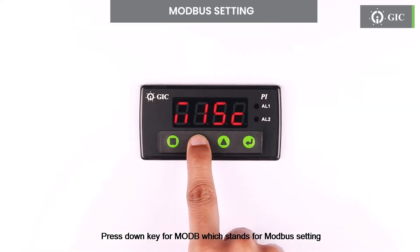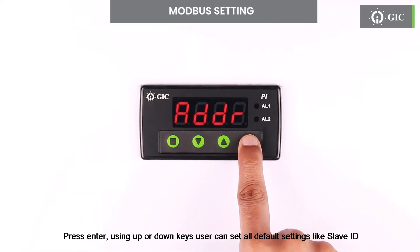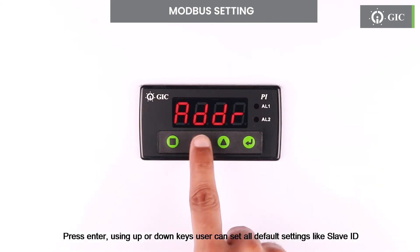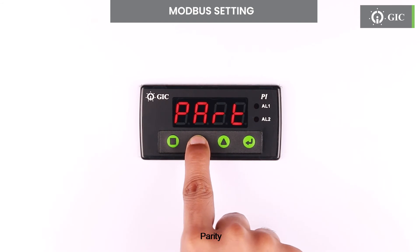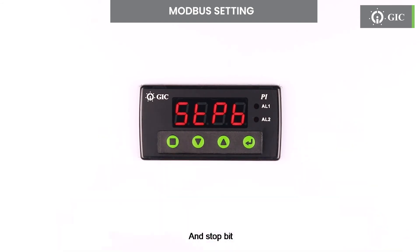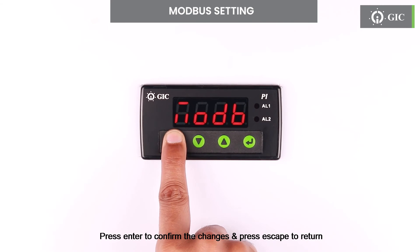Press down key for MODB, which stands for Modbus setting. Press enter, and using up or down keys, user can set all default settings like slave ID, baud rate, parity, and stop bit. Press enter to confirm the changes and press escape to return.